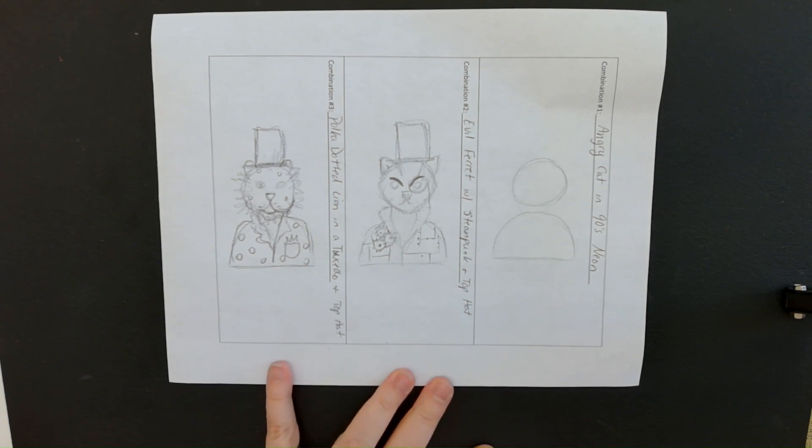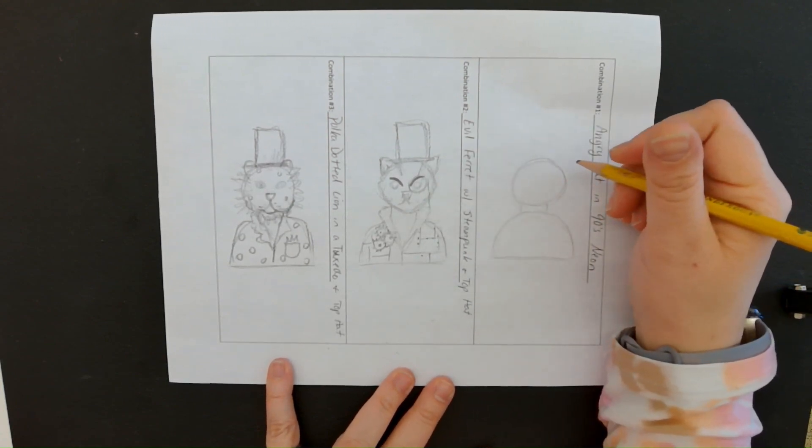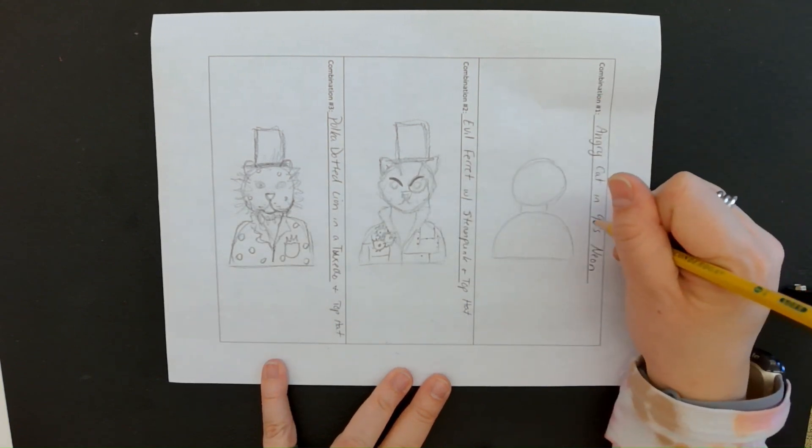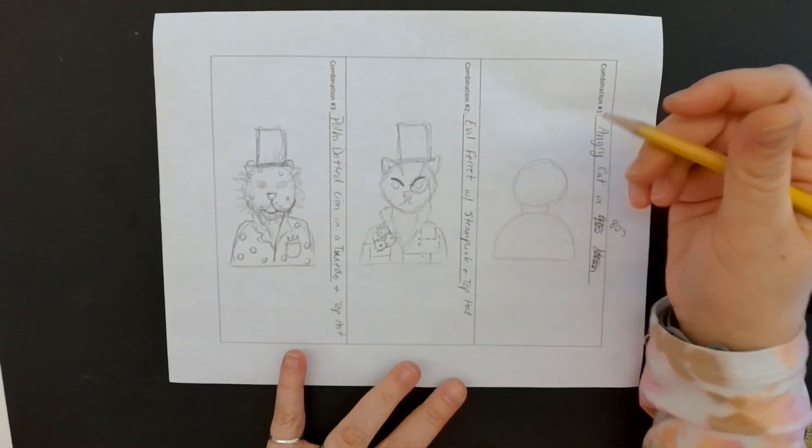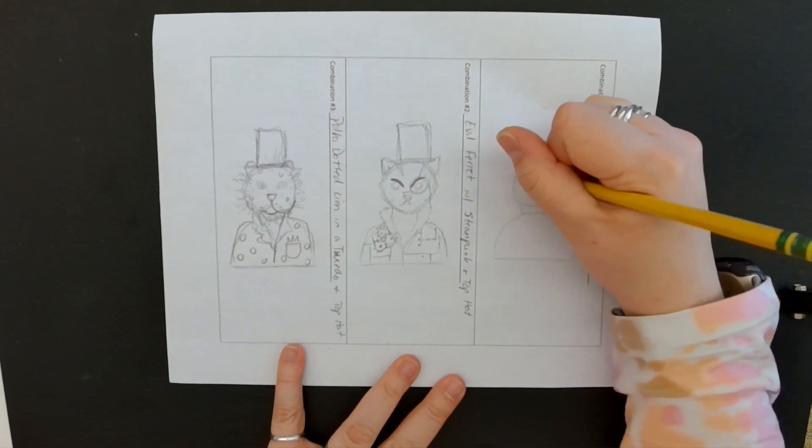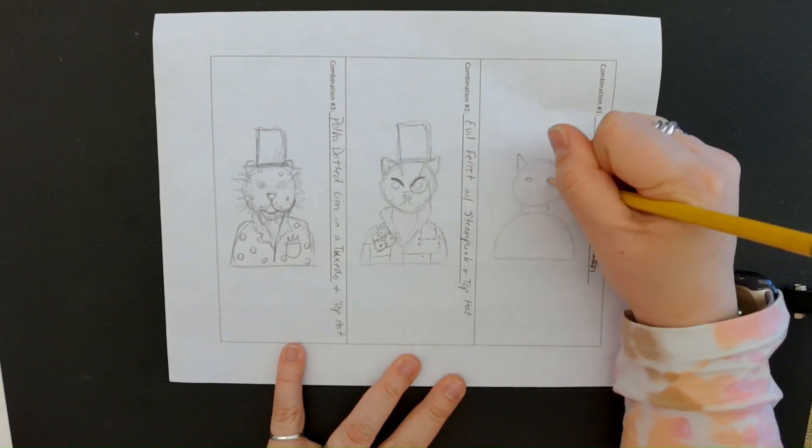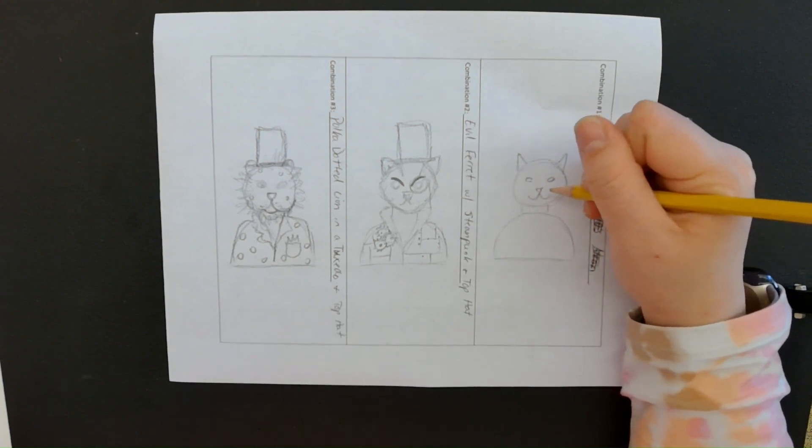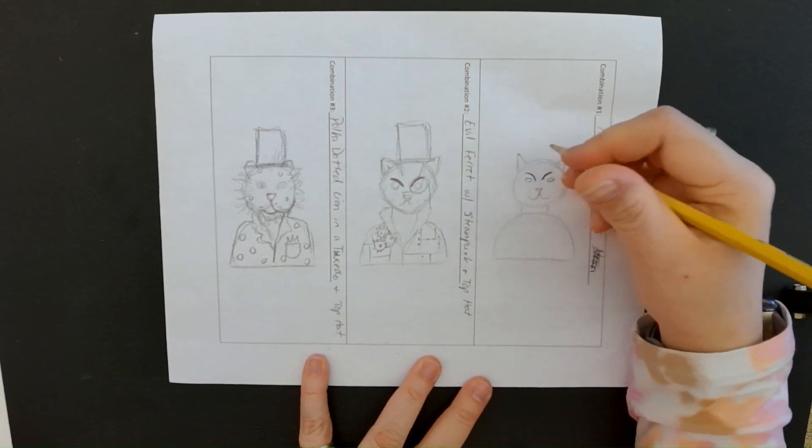And then my last one is my angry cat in 90s neon. So like, yeah, you know what, maybe I think I don't want my cat to be in 90s. I want him to be in 80s instead. I think I want him to be in 80s. So like, I think the 80s has a little more iconic kind of look to it. So I've got my cat. I've got his eyes here. He said he's angry. So he's got those same kind of angry eyebrows.